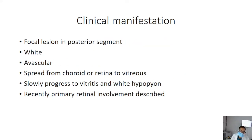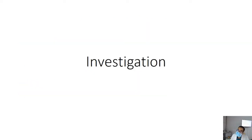Clinical manifestations an ophthalmologist must keep in mind: usually there are focal lesions in the posterior segment, white in color, usually avascular. Infection could spread through either choroidal or retinal circulation and then to the vitreous, with a slower progression to vitritis. Finally, the anterior segment becomes involved as a white hypopyon. Recently, primary retinal involvement has also been described. Further discussion regarding investigations will be done by Dr. Prachala Rathor from Ocular Microbiology.